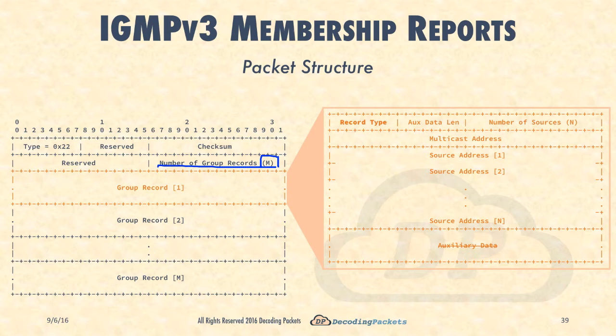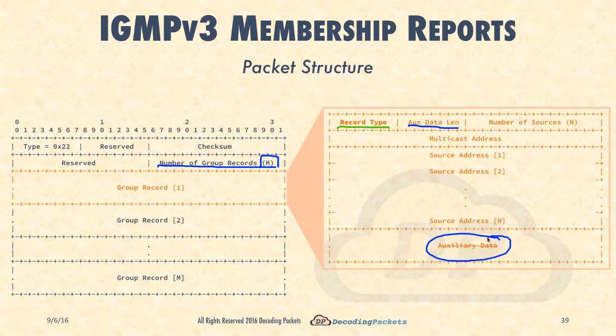Inside the group record, there is a field called the record type - I'll table that for now. There is an auxiliary data length field, which is almost always going to be zero because per the last RFC you're not supposed to use the auxiliary data yet; no use has been defined for it. That takes two fields: the record type and auxiliary data length. The fields in blue - ignore them.